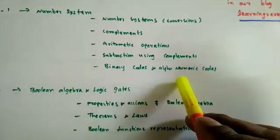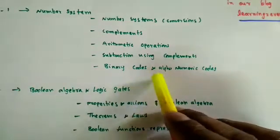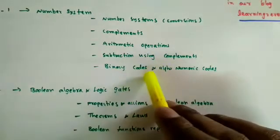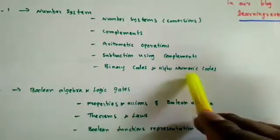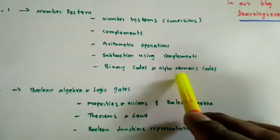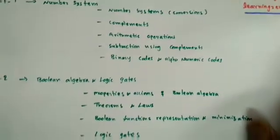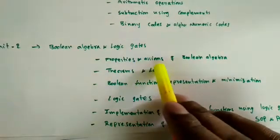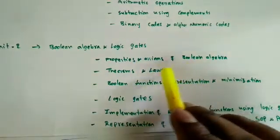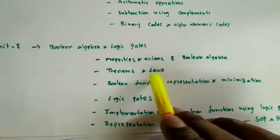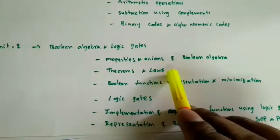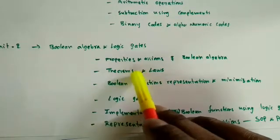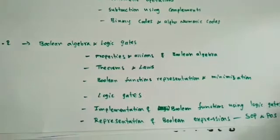The last topic in unit one was binary codes and alphanumeric codes — BCD code, XS3 code, Gray code, and alphanumeric codes like ASCII and extended BCD. In unit two, we discussed the properties and axioms of Boolean algebra, theorems and laws such as commutative, distributive, associative, consensus theorem, and De Morgan's theorems.